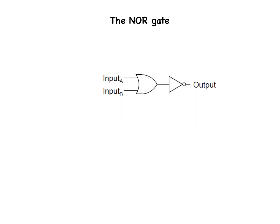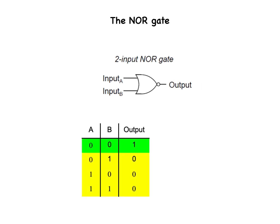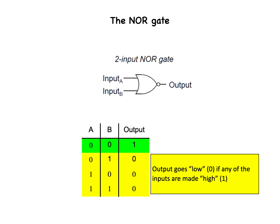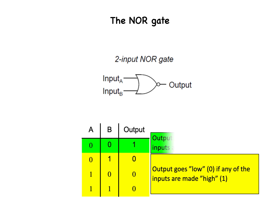As you might have suspected, there exists an inverted OR gate known as the NOR gate, which is an OR gate with its output inverted — just like a NAND gate is an AND gate with an inverted output. NOR gates, like all the other multiple input gates seen thus far, can be manufactured with more than 2 inputs. The same logical principle applies: the output goes low (0) if any of the inputs are made high (1). The output is high (1) only when all inputs are low (0).